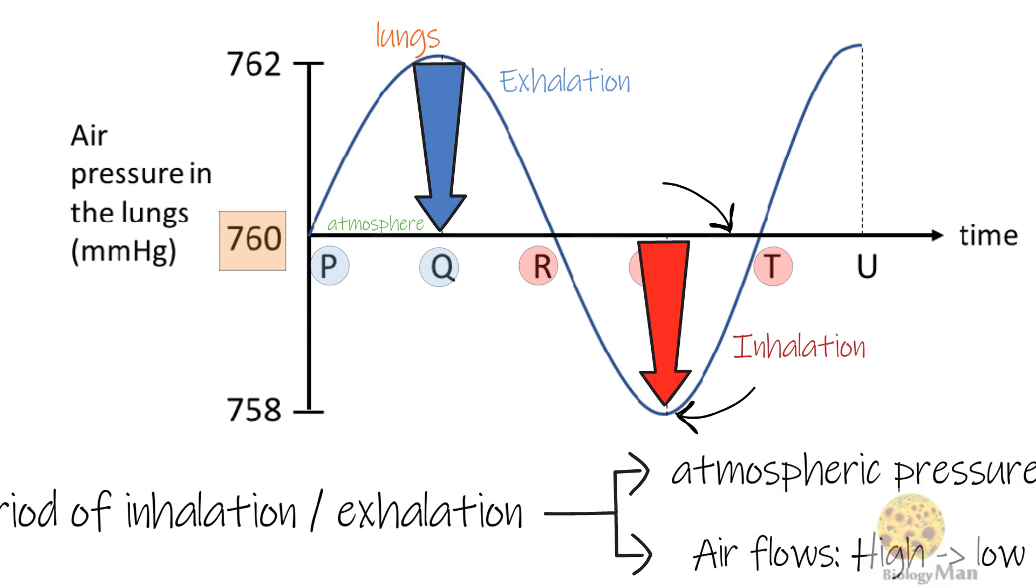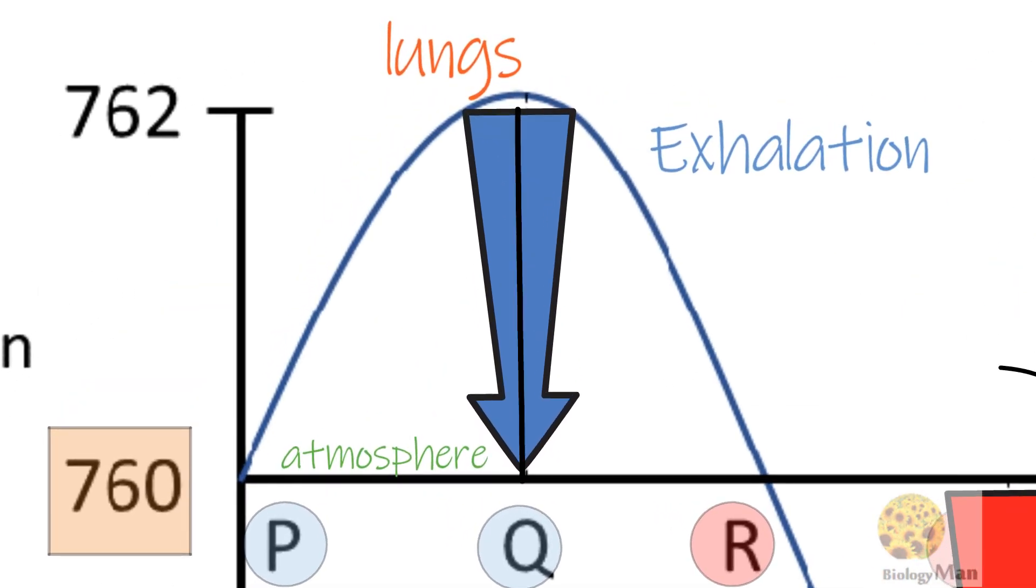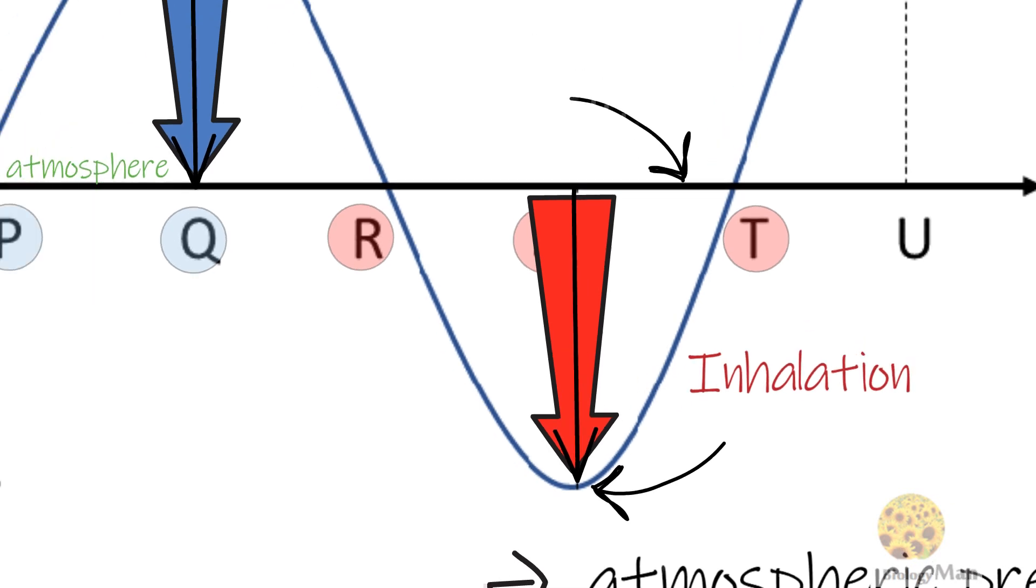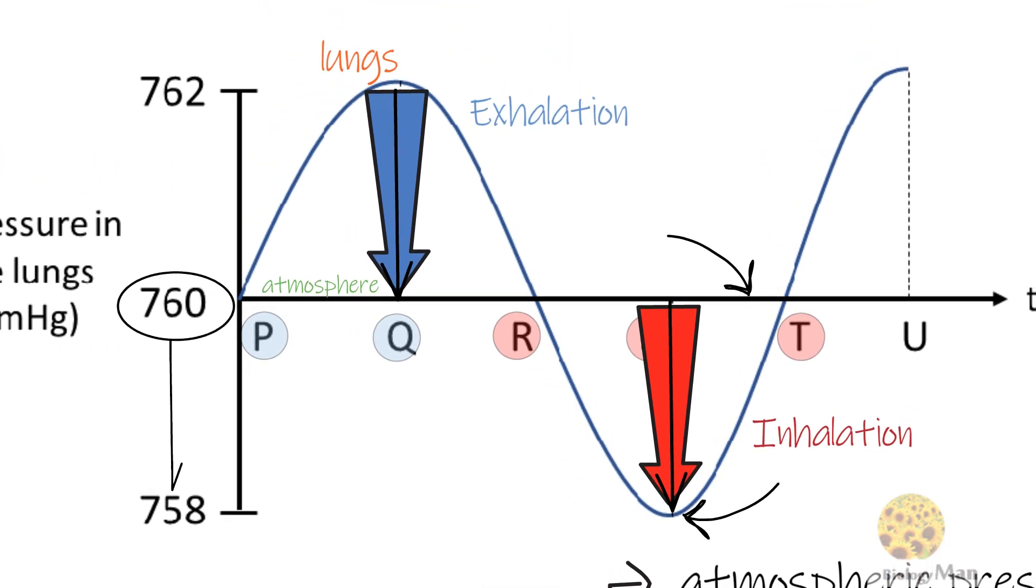If you still find it difficult, you can draw an arrow between the curve and the y-axis which indicates the level of atmospheric pressure at 760 mmHg. The arrows always point down in the graph as they show the direction of air flow from high pressure region to the lower one.